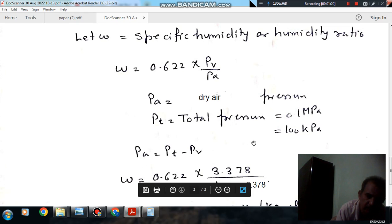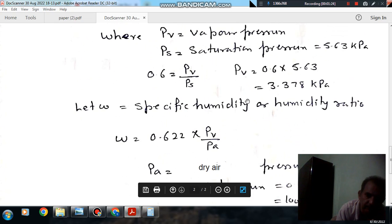PA equals PT minus PV, which is 100 kPa minus 3.378 kPa, giving 96.622 kPa.